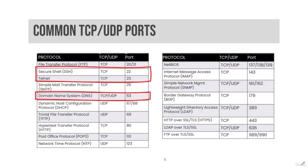Secure Shell, or SSH, was designed as a secure replacement for Telnet, FTP, and the UNIX R commands. It provides confidentiality, integrity, and secure authentication among other features. SSH includes SFTP and SCP for transferring files. SSH can also be used to securely tunnel other protocols such as HTTP. SSH servers listen on TCP port 22 by default.